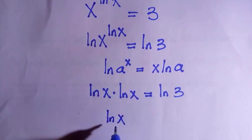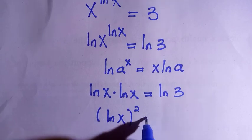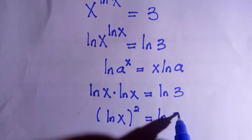So just like a multiplied by a, that is a square. So here we have ln x square equals to ln 3.